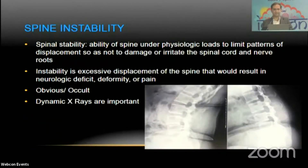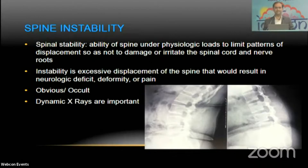The first indication is spine instability. As per White and Panjabi, stability is the ability of a spine under physiological loads to limit patterns of displacement so as not to damage or irritate the spinal cord and nerve roots. Instability is excessive displacement of the spine that would result in neurologic deficit, deformity, or pain.